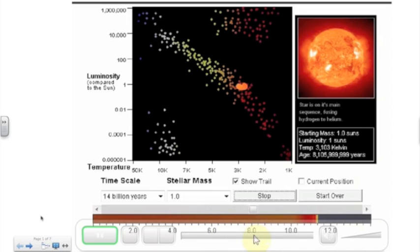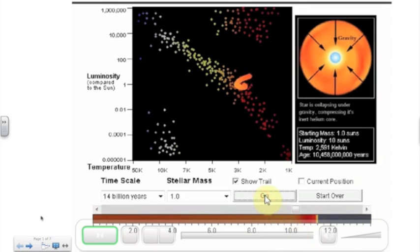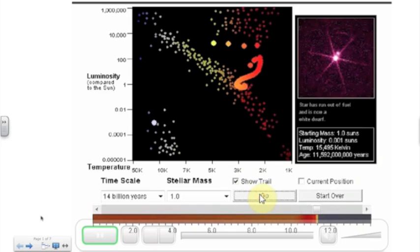At 8 billion years we are seeing some movement now for our star the same size as our Sun. At this point it is moving off the main sequence. It is becoming a giant.